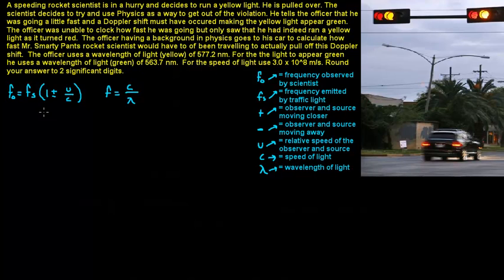And of course c is the speed of light. So the first thing we need to do is change these wavelengths of light into frequencies, because for this problem we are using frequencies, not wavelengths. So for f_o, we are going to take c, which is the speed of light, so 3.0 times 10 to the 8th meters per second, divided by the wavelength of light that was supposedly observed, which is the green, which is 563.7 times 10 to the negative 9th meters.